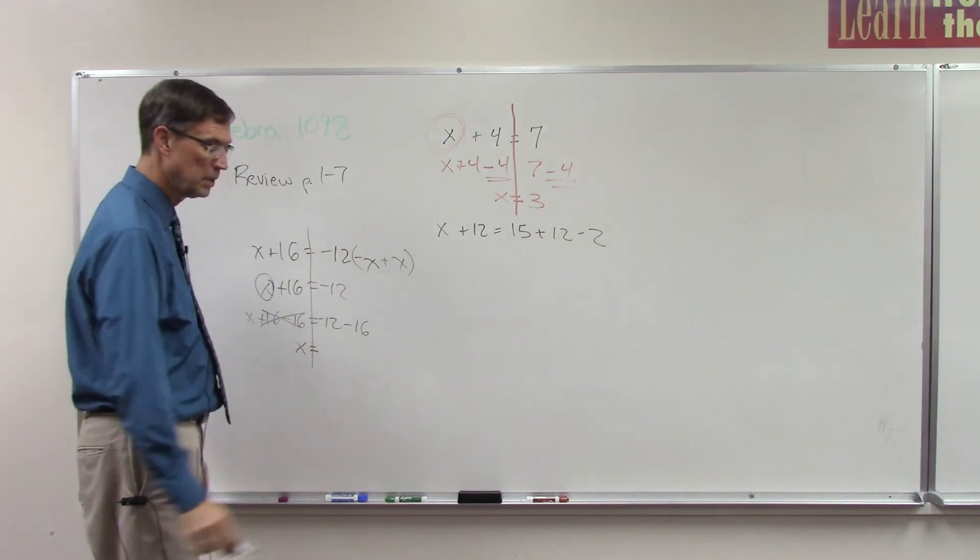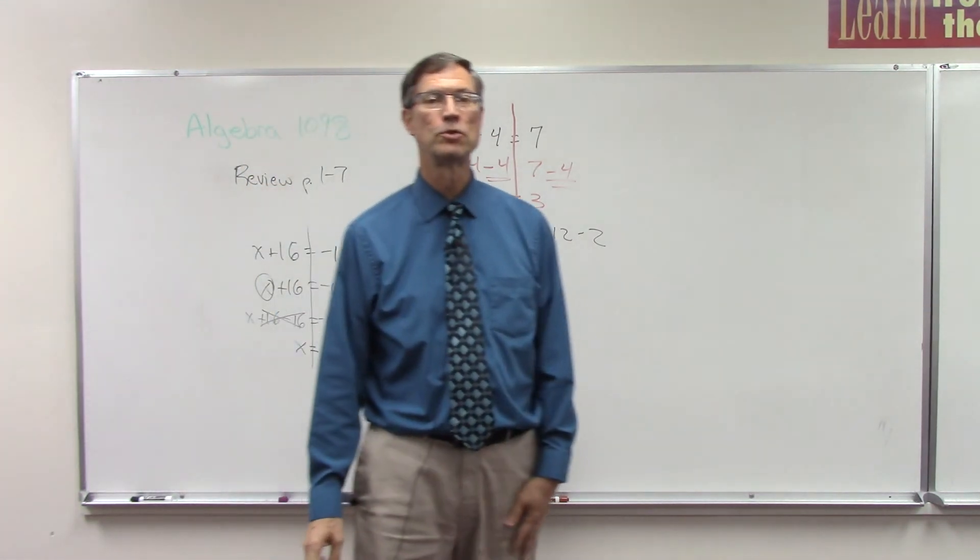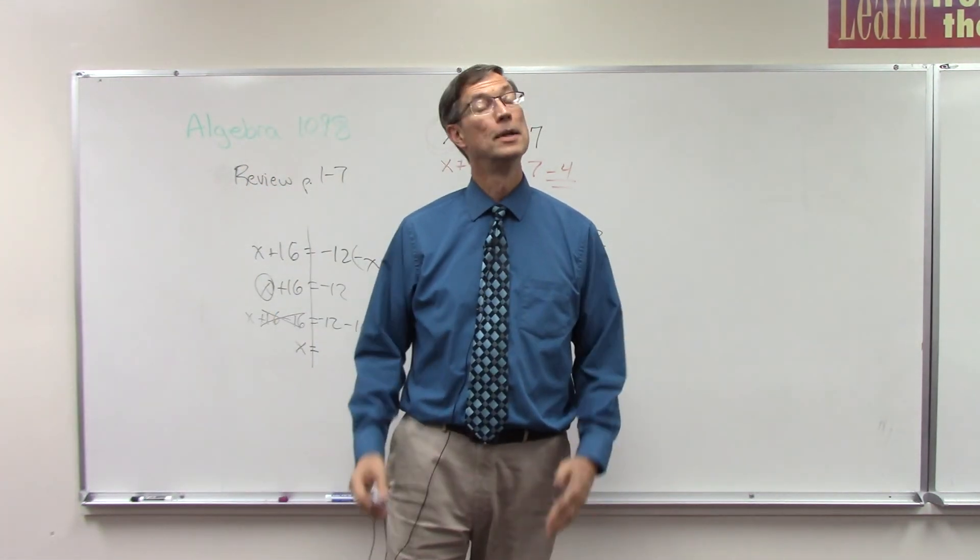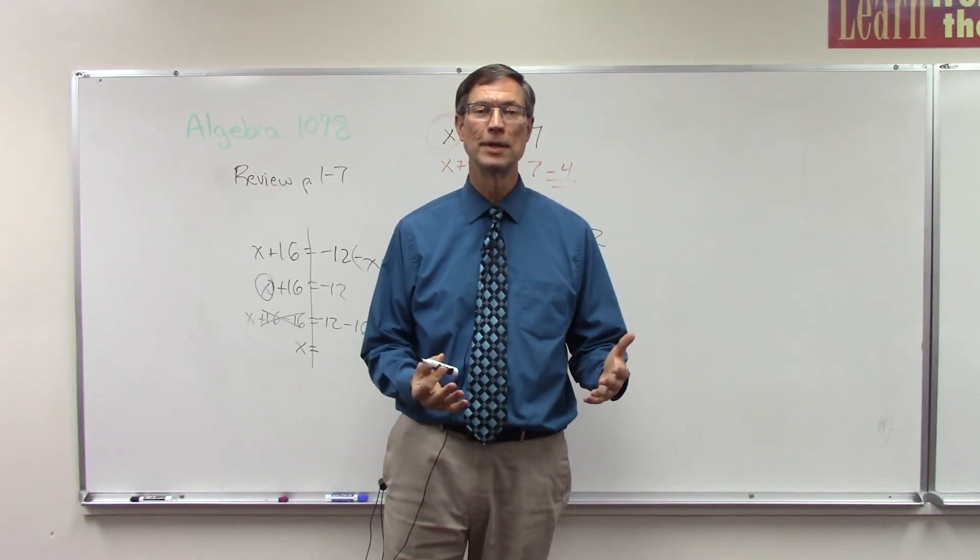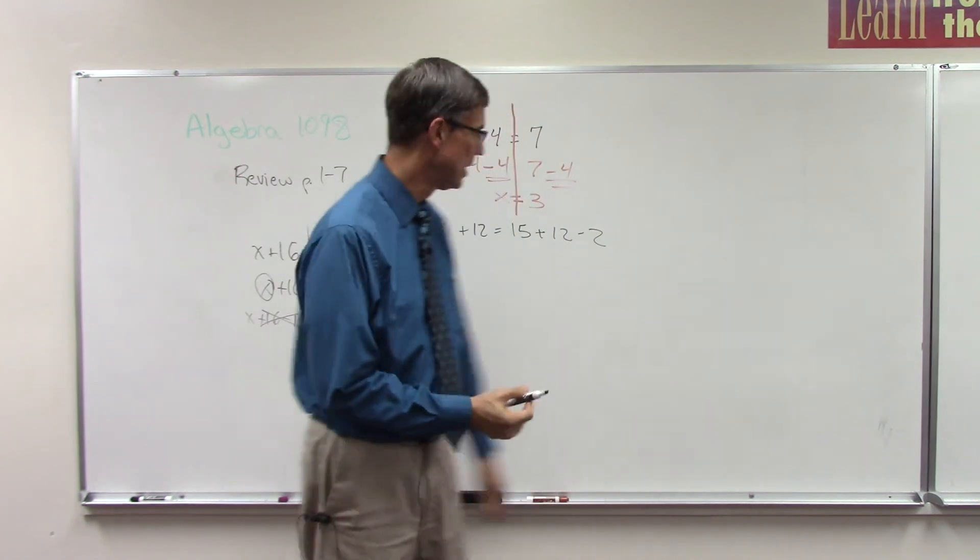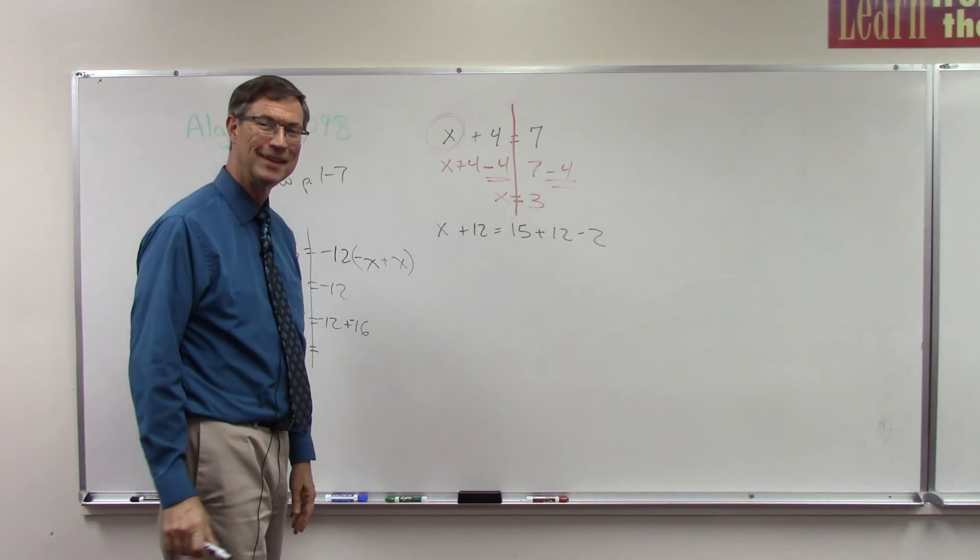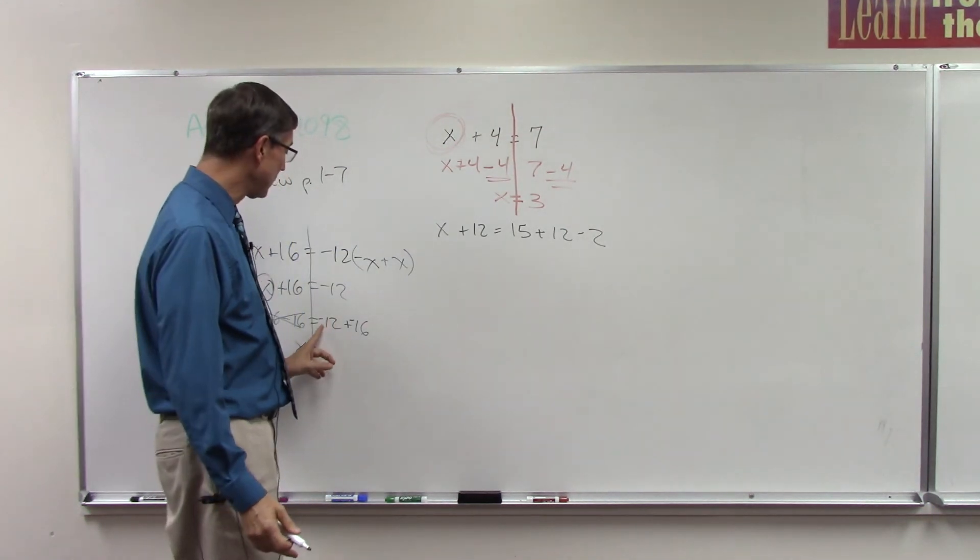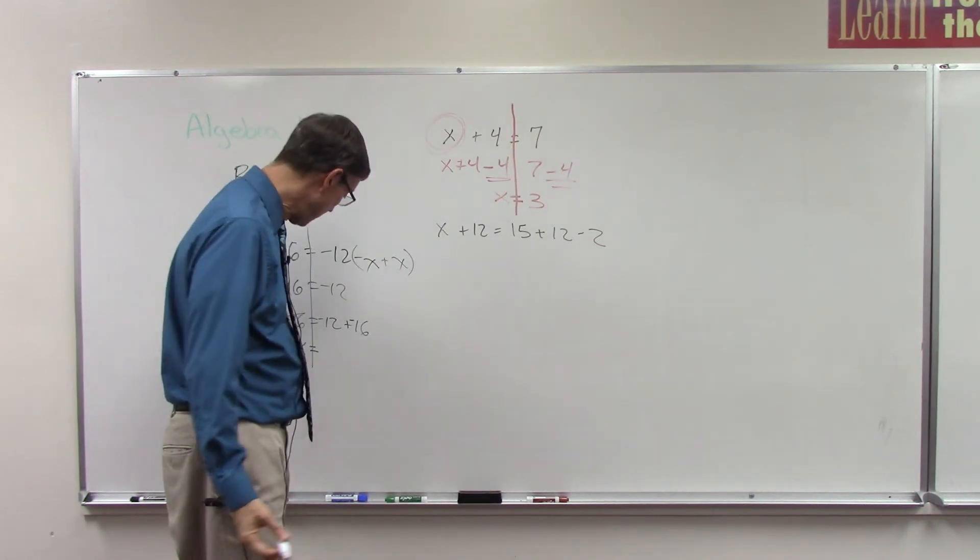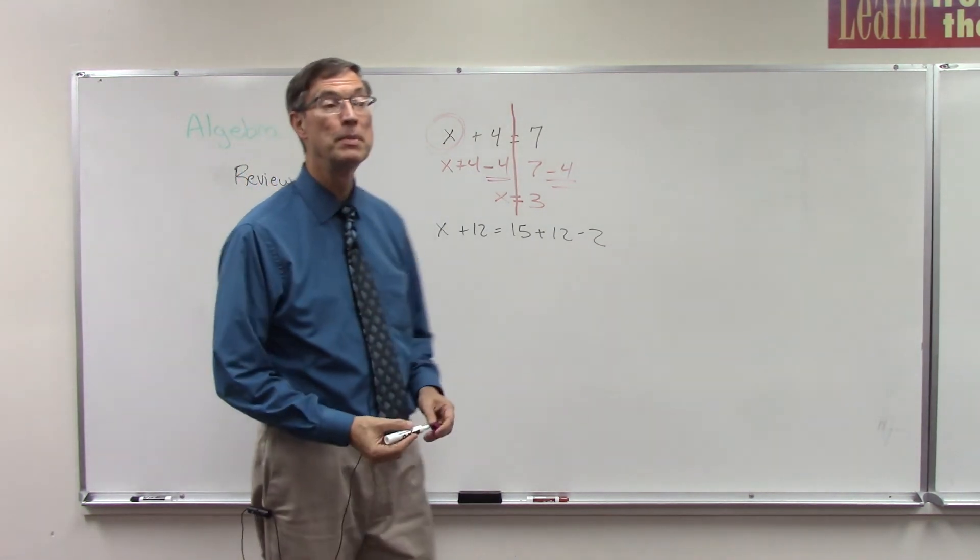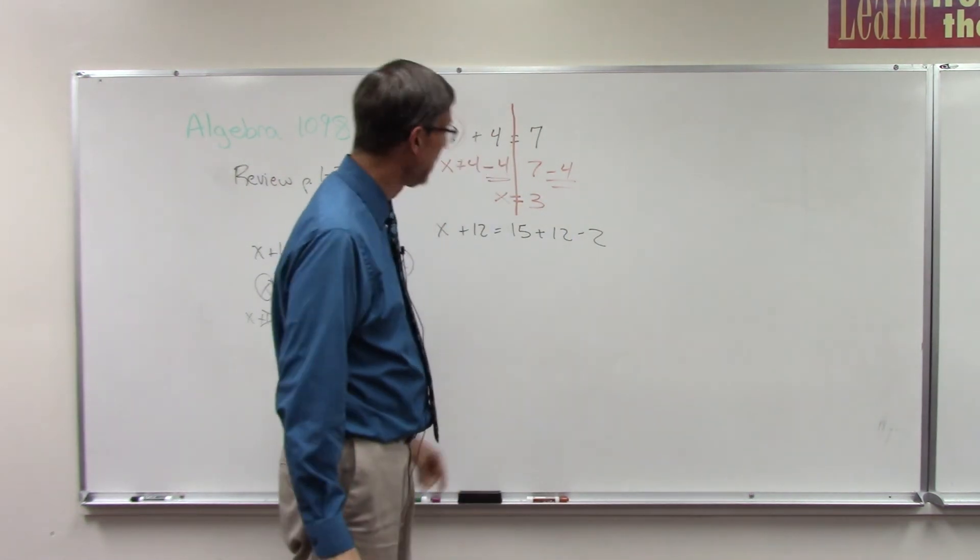This will cancel that out, so I'm left with just x equals—now let's be careful here. Do you remember the rules? What is our rule for subtracting positive and negative numbers? We change subtraction to addition and change the second number to its opposite. So if I do that right here, this becomes plus negative 16. Now I'm adding negative 12 plus negative 16. I can just add and keep the common sign. You know what, I'm not going to finish that one because I think that's one of your homework problems, so you can check back and see if you got that one correct.